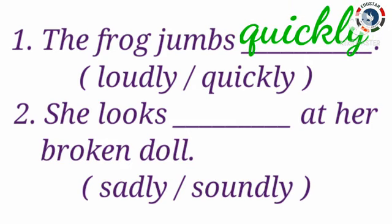Second one: She looks ___ at her broken doll. Options are sadly and soundly. Now tell me what is the answer. Yes, sadly. Because the word sadly tells us how the action happens — the word sadly describes the action word 'looks'. So the correct answer is sadly. She looks sadly at her broken doll.